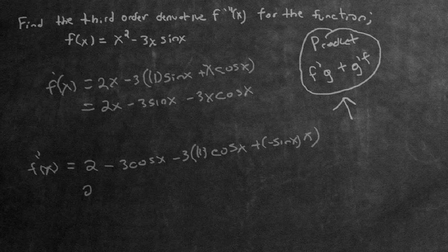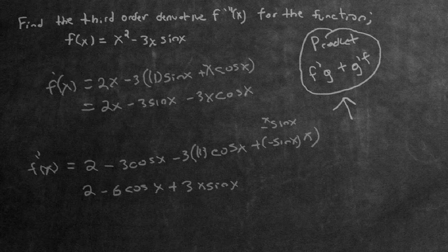Now let's simplify. We have 2 here. We see we have a negative 3 cosine x, and we also have one right here, so if we multiply through and add them together, we would have negative 6 cosine x. And then, multiplying the negative sine x by negative 3 out front, we get a positive 3x sine x as our final result. This would be the second order derivative.